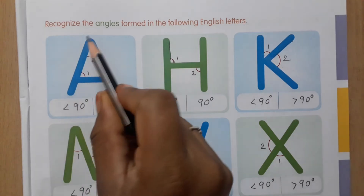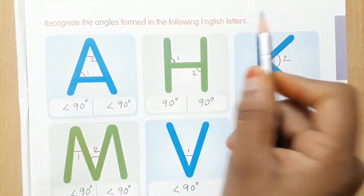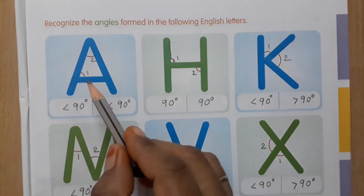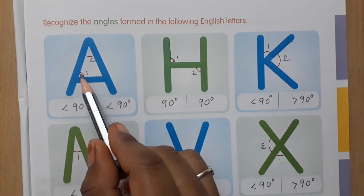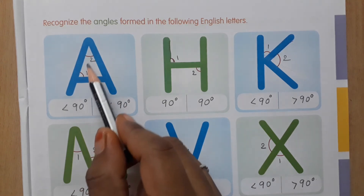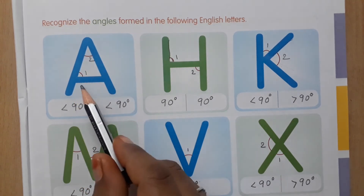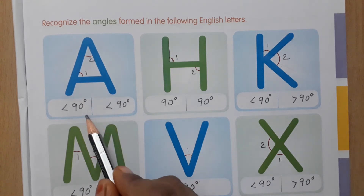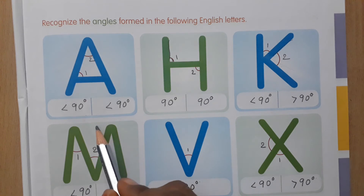Recognize the angles formed in the following English letters. In the letter A, two angles are formed. Both are less than 90 degrees — both are acute angles.